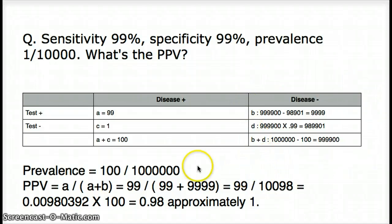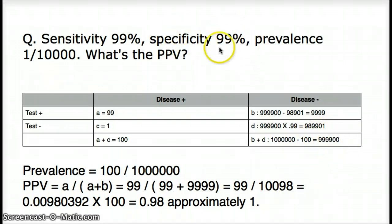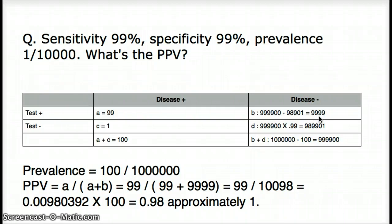Now let's go to the disease negative box. We know our population has a million people, and of those million, 100 are sick. So B plus D equals 1,000,000 minus 100, which is 999,900. Don't be intimidated by the big numbers — it's better to deal with bigger numbers than decimals. Once we have B plus D, and we know the specificity is 99%, we take 999,900 times 0.99 to find our D value. Then B plus D minus D gives us our B value. Now the whole box is filled up.